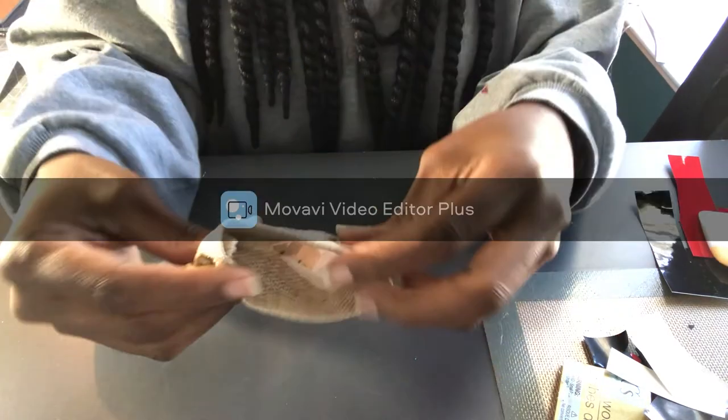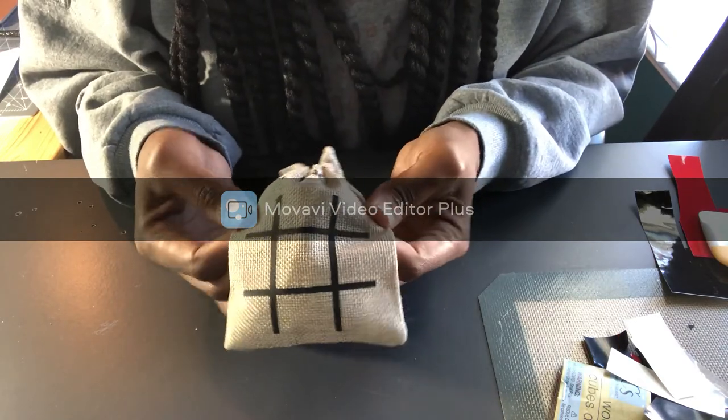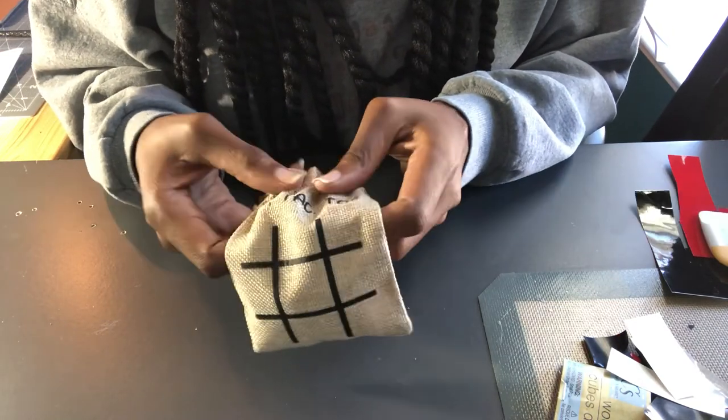All right, and then once you're done, you put it all in the little baggie, close the drawstring up and boom, it's ready to play again. All right y'all, so I hope y'all enjoyed this little tutorial on how to make a travel tic-tac-toe game.